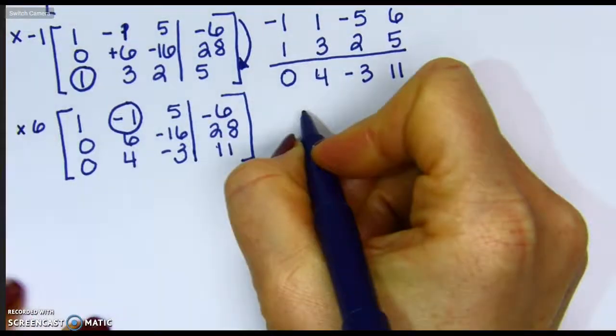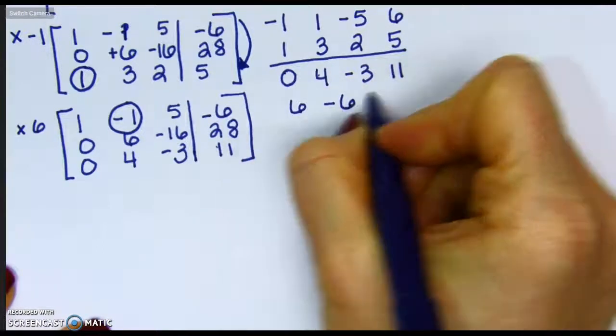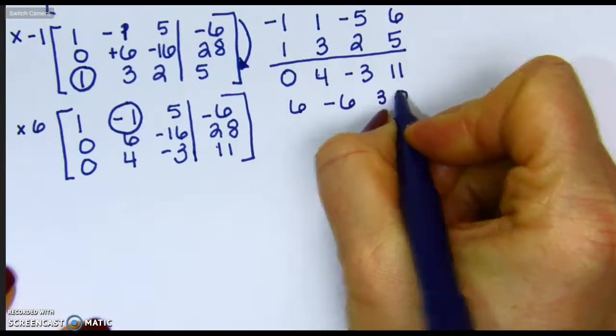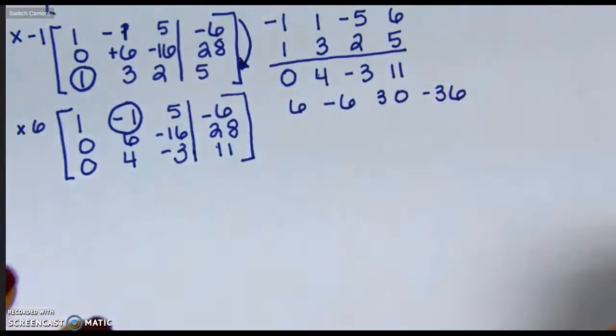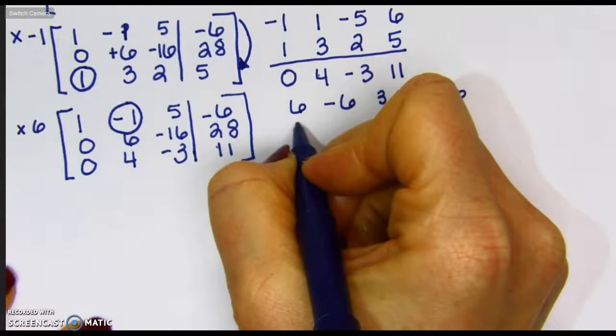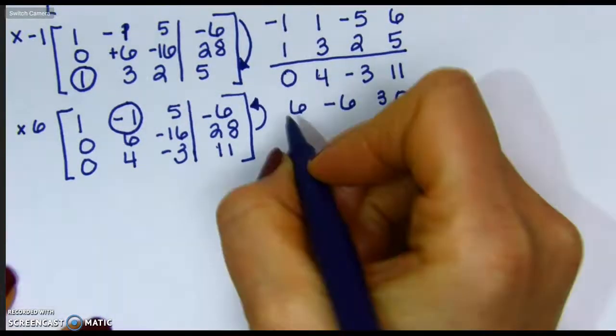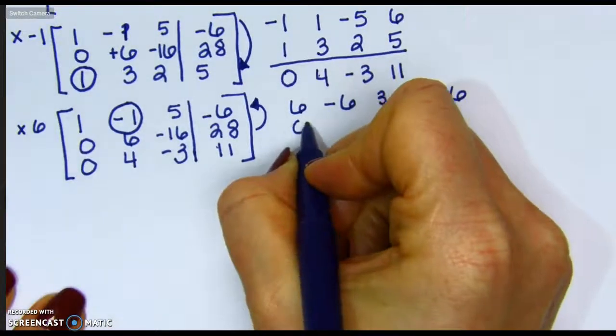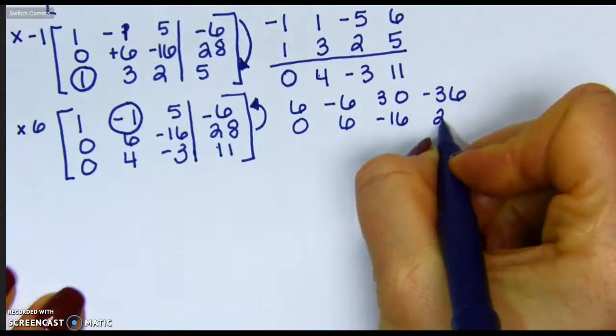So I end up with 6, negative 6, 30, negative 36. I don't need to multiply my bottom row by anything, but know that we're going to add up because I want to replace that negative 1 with a 0. So 0, 6, negative 16, 28.